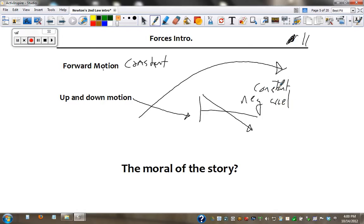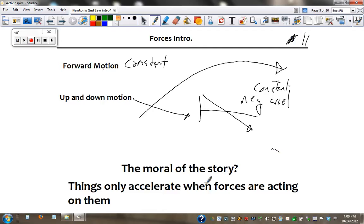So what do objects need to accelerate is like the first question. Objects need a, objects will only accelerate when forces are acting on them. So kind of a big core idea. As the Angry Bird is flying through the air forward, as soon as it leaves the slingshot, nothing's pushing it forward. Nothing's slowing it down.